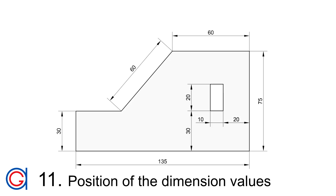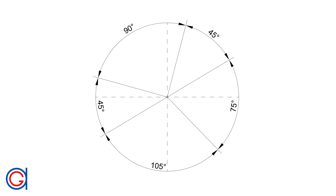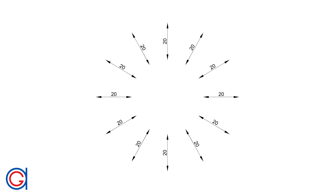Rule 11: How to position the dimension values with the dimension lines — 3 different options. With the first option, we always locate the dimension values in the centre of the dimension lines and in the same direction or angle as the dimension lines. If the dimension line is vertical, we locate the dimension value to its left and in the centre. The same method applies when dimensioning angles, where the dimension value follows the angle of the dimension lines.